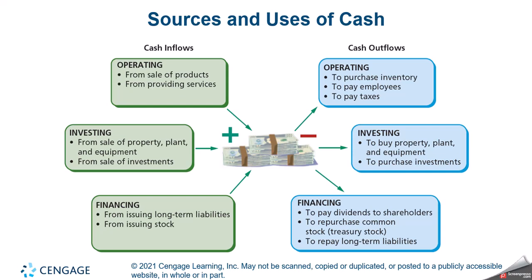In investing, a growing company is buying property, plant, and equipment, and could also be investing in the stock market. Cash outflows in financing include paying dividends to shareholders, paying off debt, or purchasing treasury stock like we covered in the last chapter.